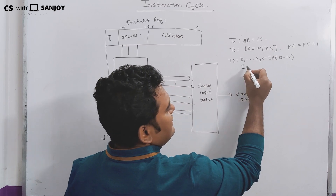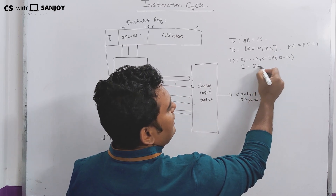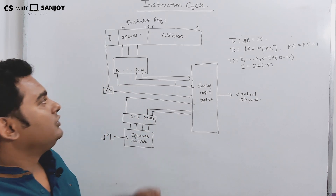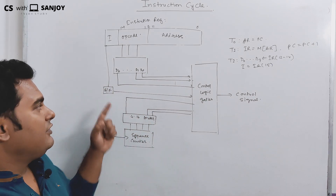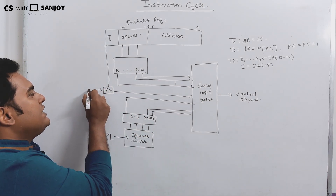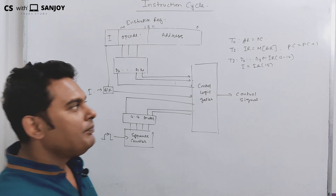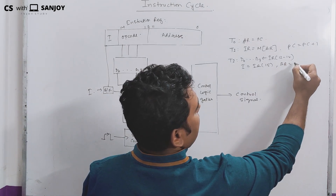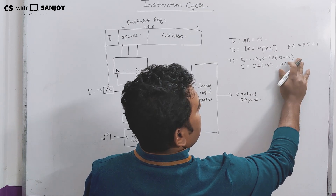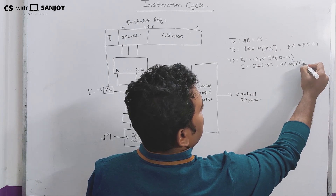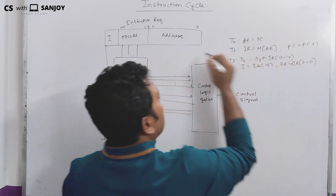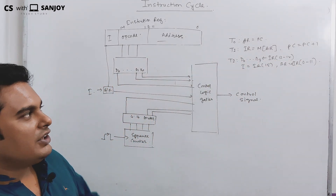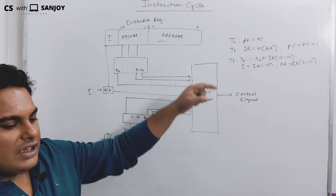The I bit is taken from IR bit 15 — that is the addressing mode flag — and the address register is loaded from IR bits 0 to 11. This is the sequence by which the instruction register fields are used.